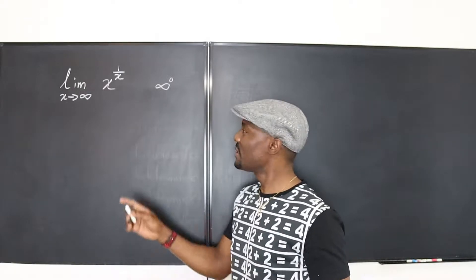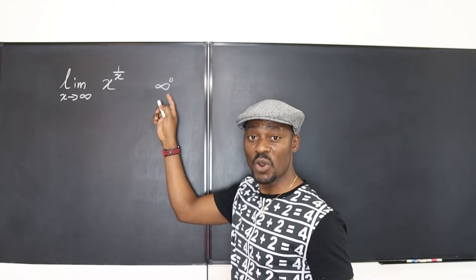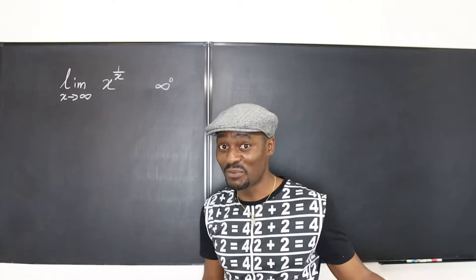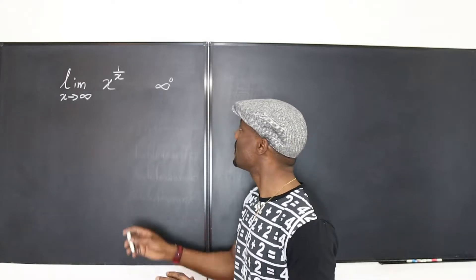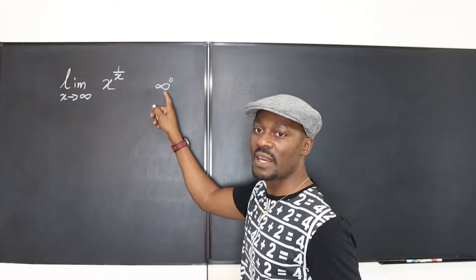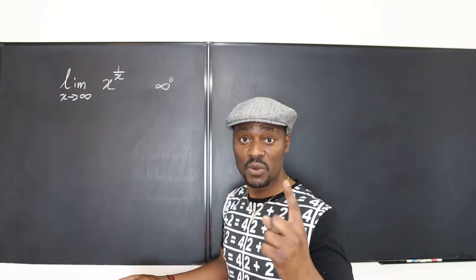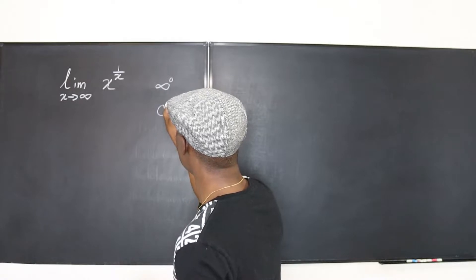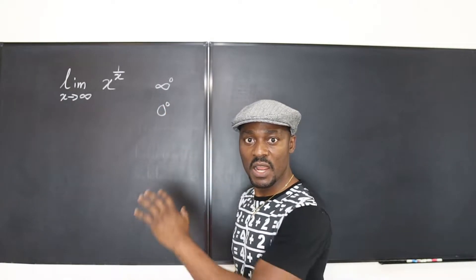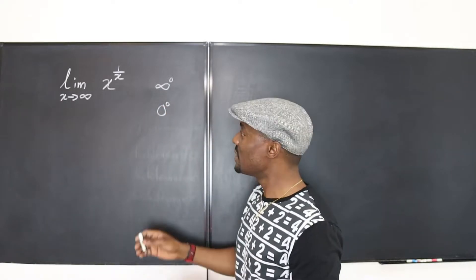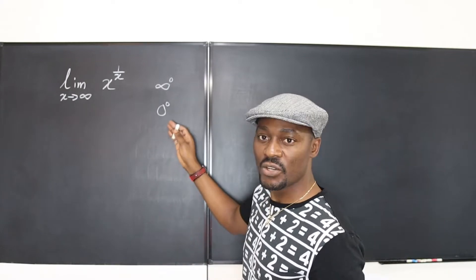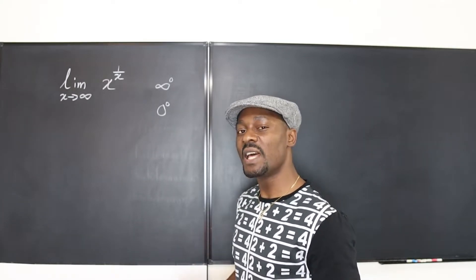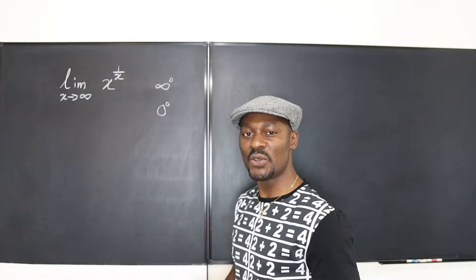The problem is this is an indeterminate form — one of the seven deadly sins in mathematics. You cannot conclude that infinity raised to power 0 is equal to 1, just as you cannot conclude that 0 raised to power 0 is equal to 1. Because these are indeterminate forms, you have to find another way of solving the problem.